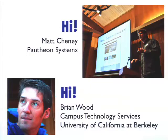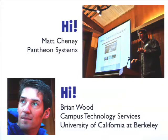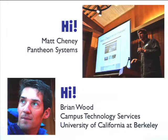I've been doing Drupal for a long time — about five or six years. I started a company called Chapter 3 with Zach Rosen and Josh Koenig, and we did a lot of work in universities, both in the Bay Area and around the country. I've been working with Brian and UC Berkeley for a number of years on different projects, including running Bad Camp together at the UC Berkeley campus every fall.